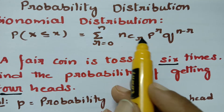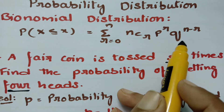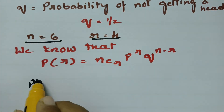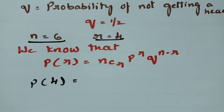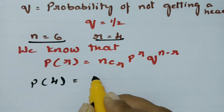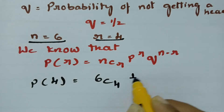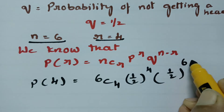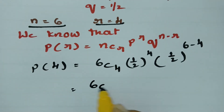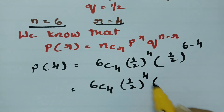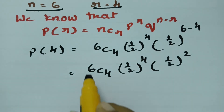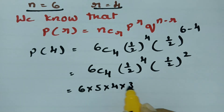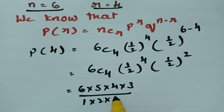Now I am going to use the binomial distribution formula: nCr × p^r × q^(n−r). With r = 4, the probability of getting 4 heads is: 6C4 × (1/2)^4 × (1/2)^(6−4), which is 6C4 × (1/2)^4 × (1/2)^2. Now, 6C4 is 6×5×4×3 divided by 1×2×3×4.